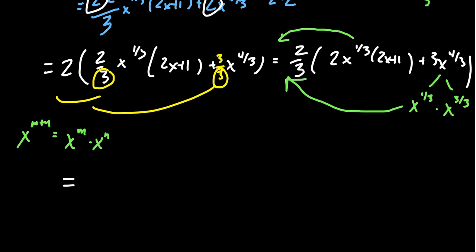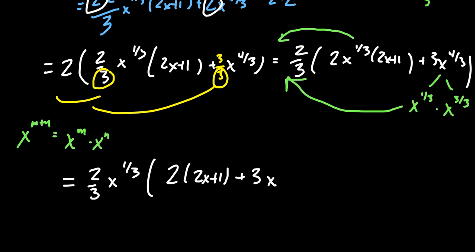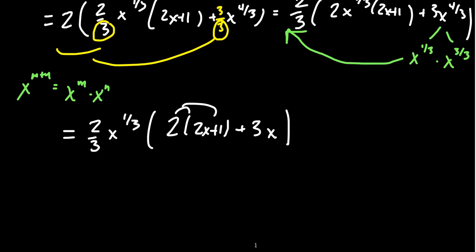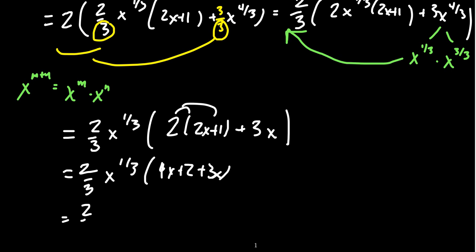That gives us the factored form: 2/3 x^(1/3) — that was our GCD — times (2(2x+1) + 3x^(3/3)). Since 3/3 = 1, I write that as 3x. Now there's nothing else to factor, so feel free to distribute and combine like terms: 2/3 x^(1/3) times (4x + 2 + 3x), which simplifies to 2/3 x^(1/3) times (7x + 2).